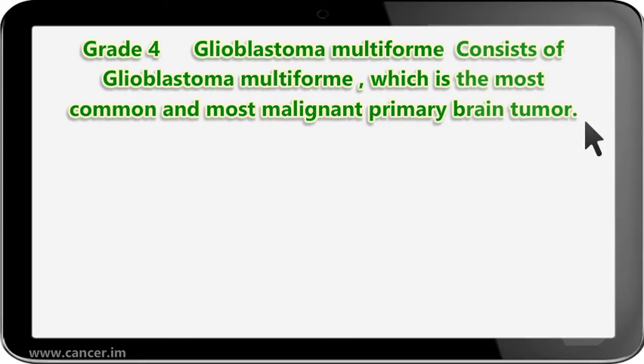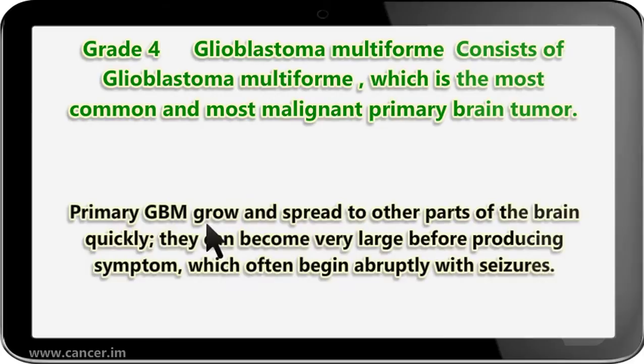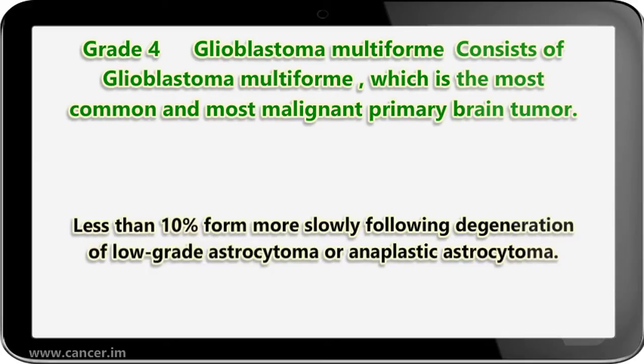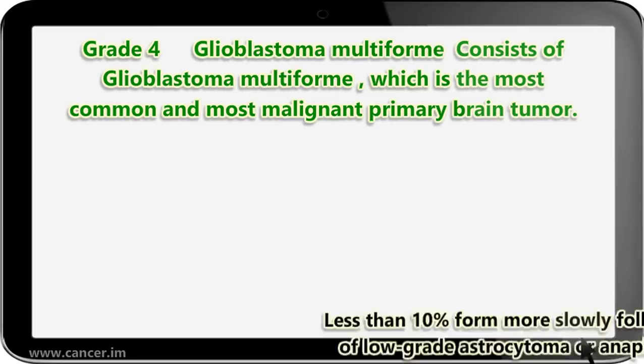Grade IV glioblastoma multiforme is the most common and most malignant primary brain tumor. Primary GBM grows and spreads to other parts of the brain quickly; it can become very large before producing symptoms, which often begin abruptly with seizures. Less than 10% form more slowly following degeneration of low-grade astrocytoma or anaplastic astrocytoma.